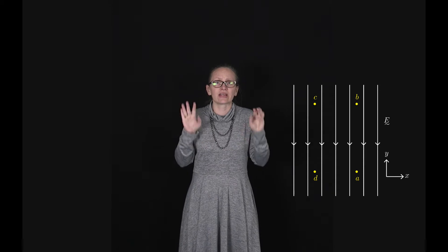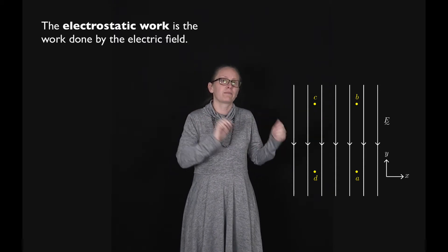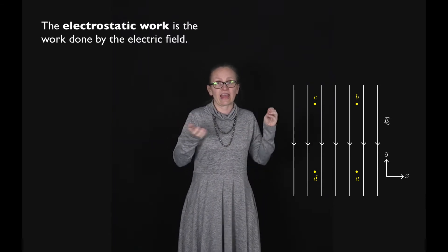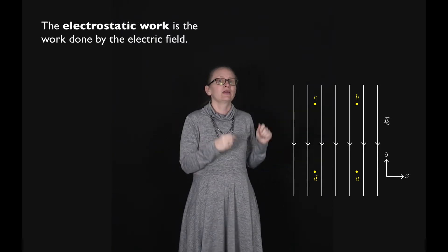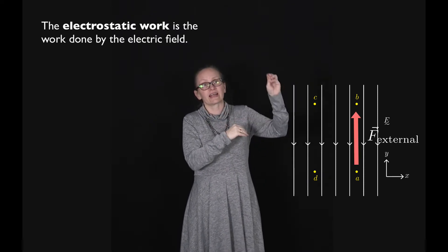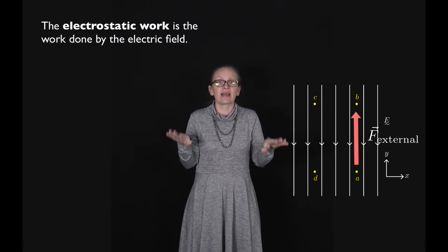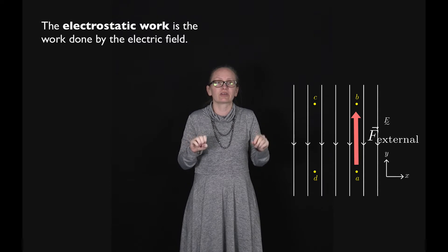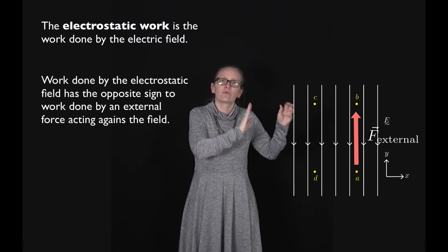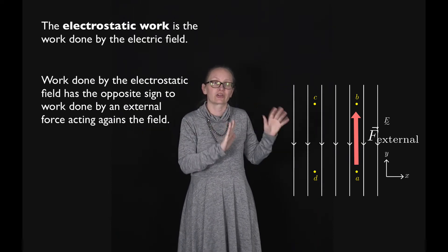Now this is known as the electrostatic work. So it's the work done by the electric field. If the particle was initially at rest at A, to get it up to B we'd need some external force doing work on the object to get it up to B. But we're not considering the work done by the external force. We're considering the work done by the electrostatic field which will have the opposite sign to the work done by that external force.